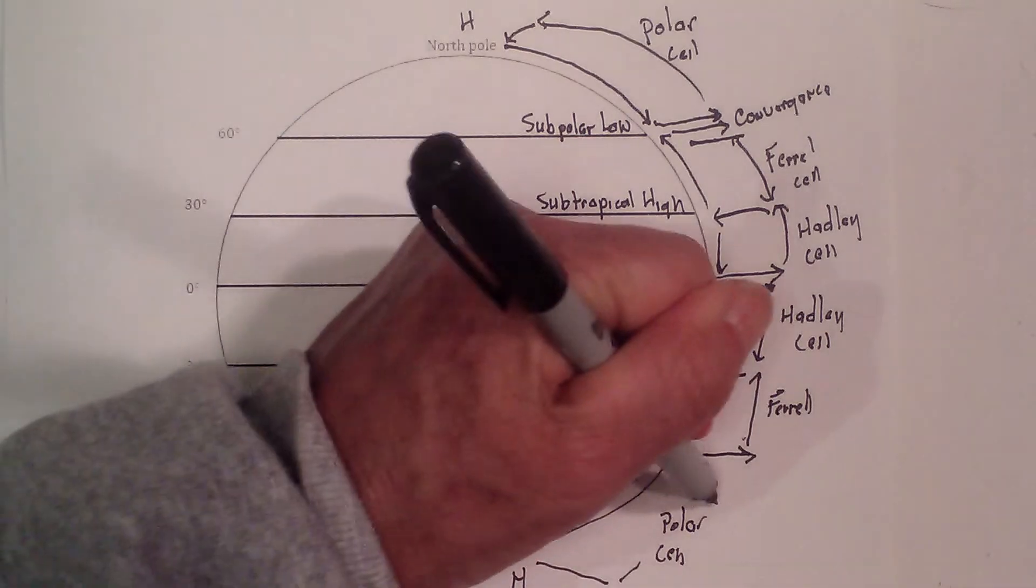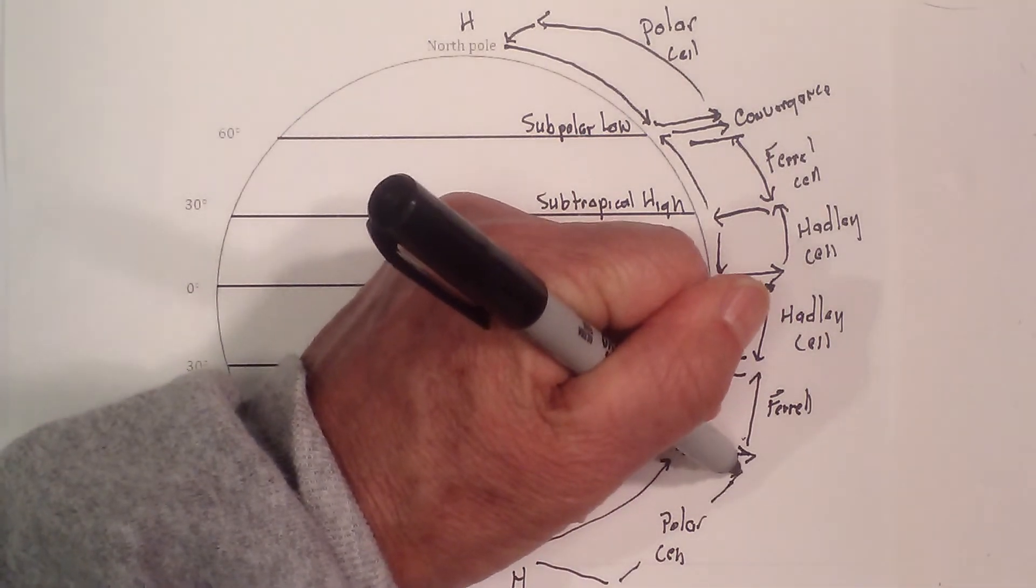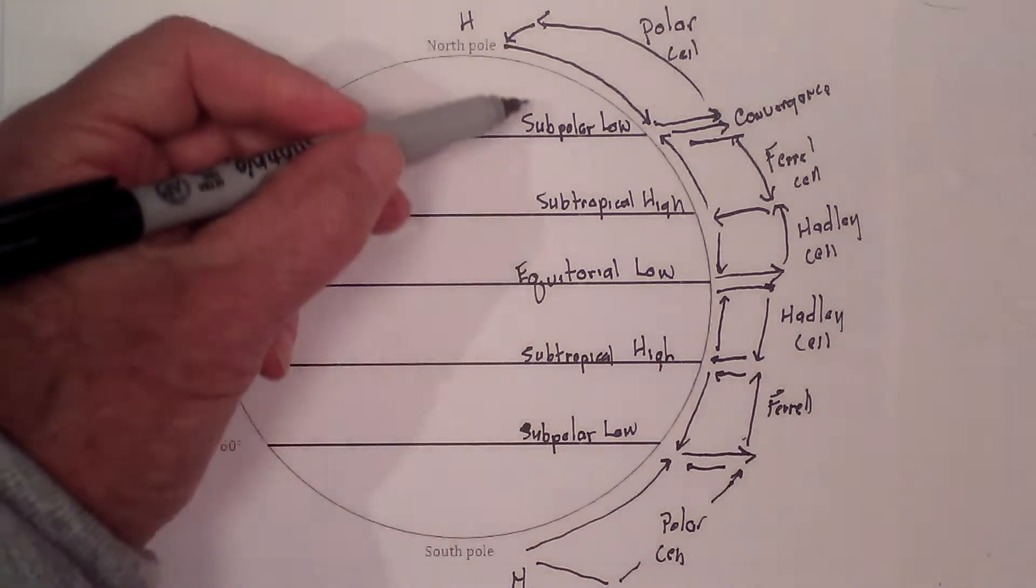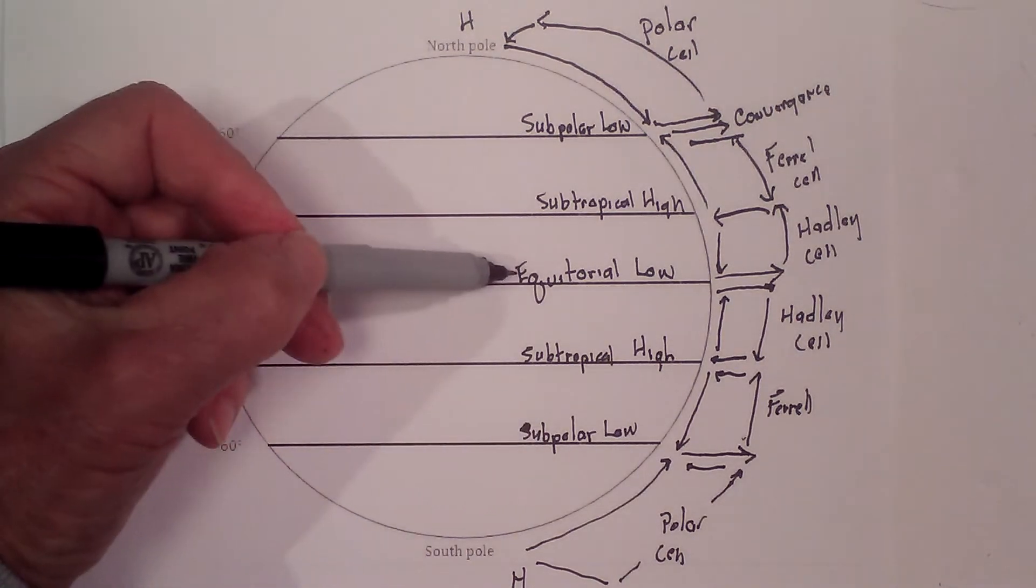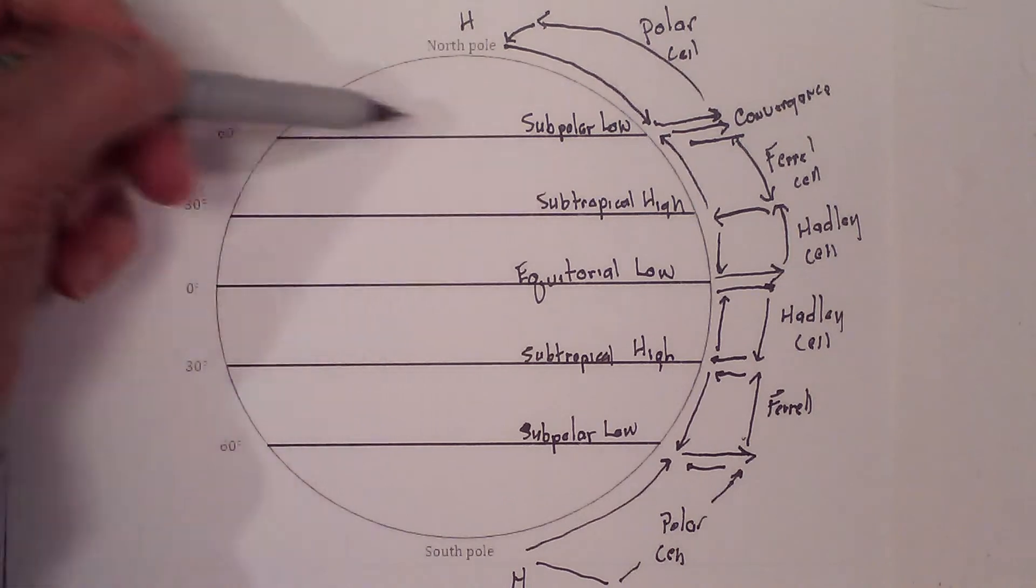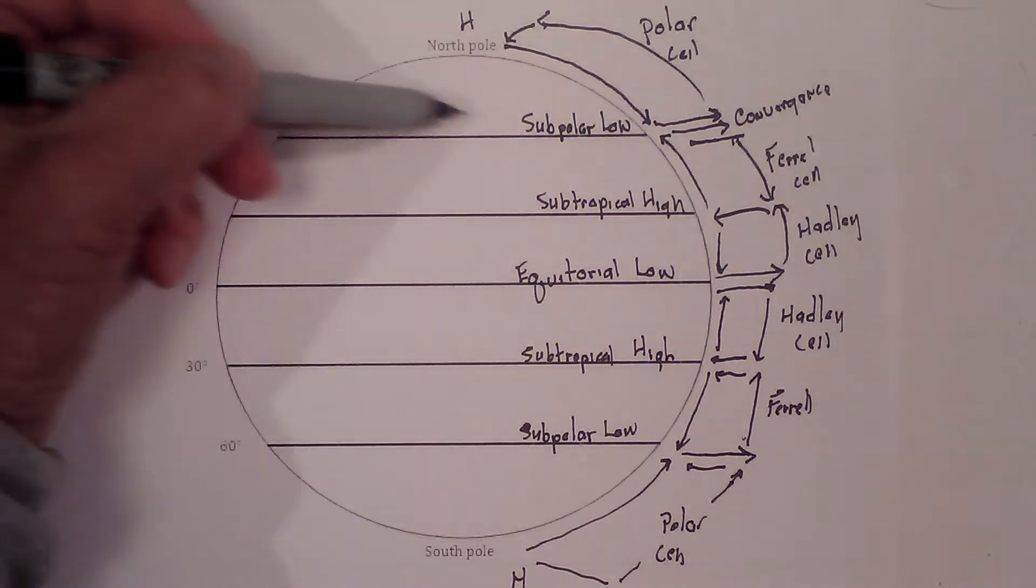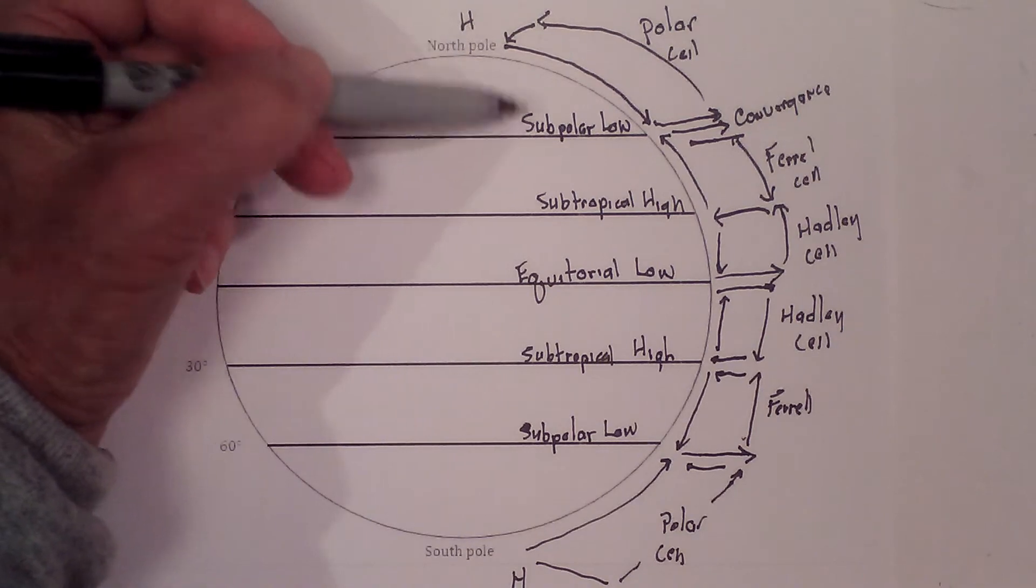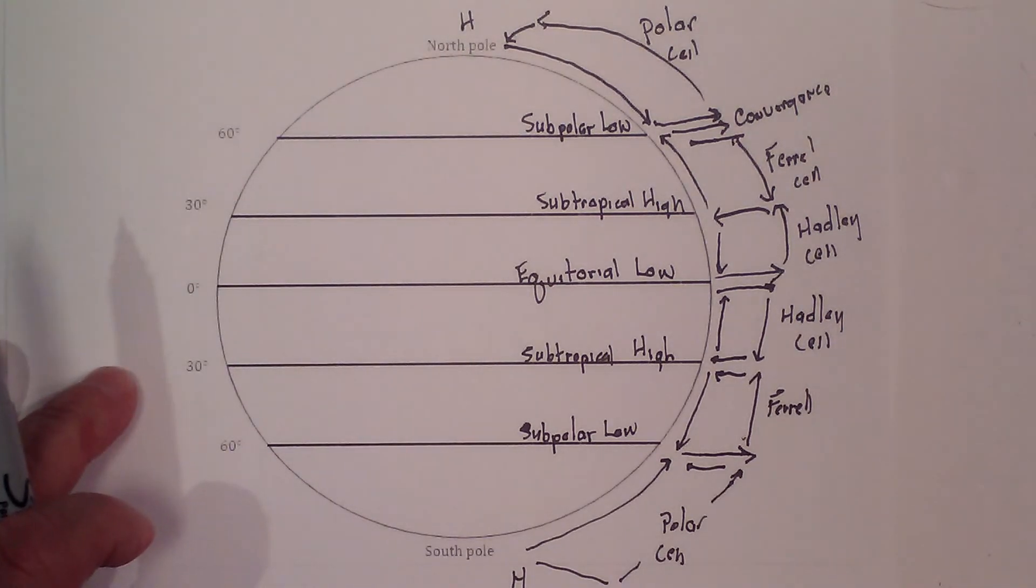Now the reason why we're talking about that is because we now have identified why we have highs and lows. At the equator, we have low, then at 30 degrees, it's high, 60 degrees, and then high at the very top, 60 degrees is low. So that's going to dictate the direction of the wind.